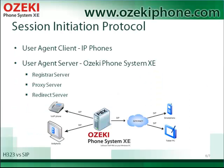H.323 also uses the RTP and RTCP protocols. The SIP protocol consists of a user-agent client and a user-agent server. User-agent clients are the endpoints, so they are the IP phones. The user-agent server can be a registrar server, a proxy server and a redirect server. The registrar server stores assignments of names and addresses. The proxy server manages SIP calls, and the redirect server is responsible for finding the location of endpoints.